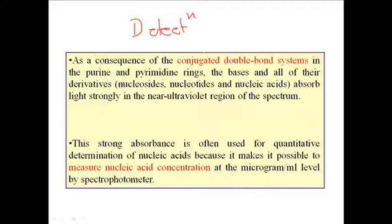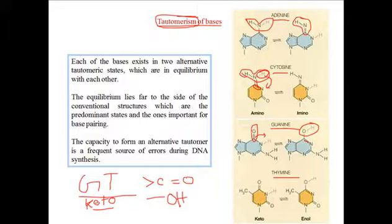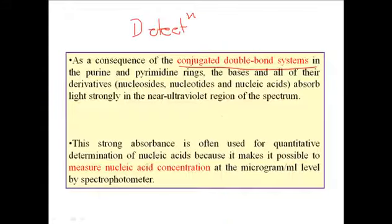As a consequence of this conjugated double bond system, in all cases with this keto form, this conjugated double bond system means the double bond system with nitrogen and carbon. These conjugated double bonds present in purine and pyrimidine rings, the bases and all of their derivatives.